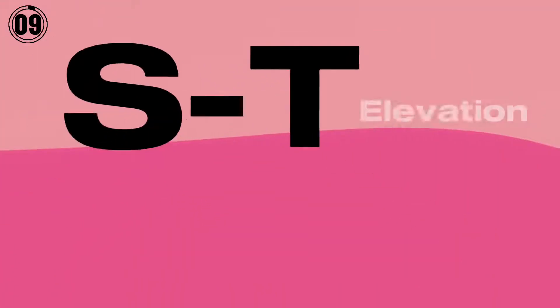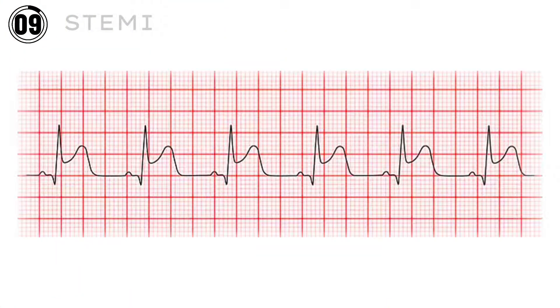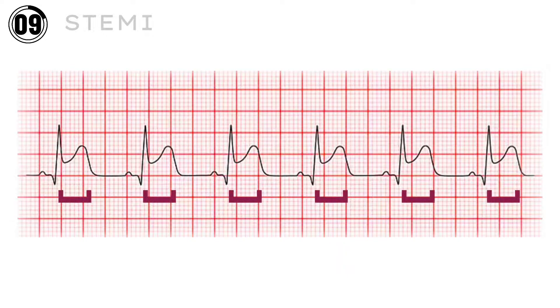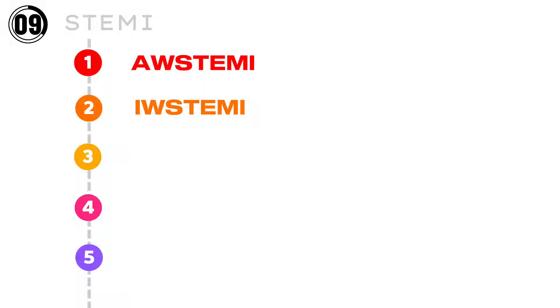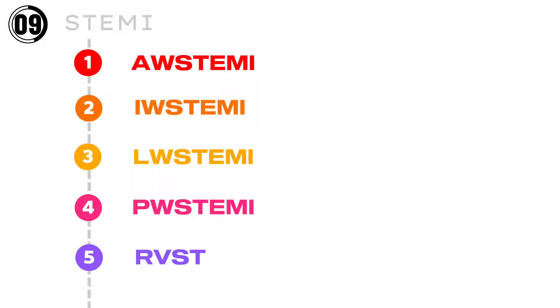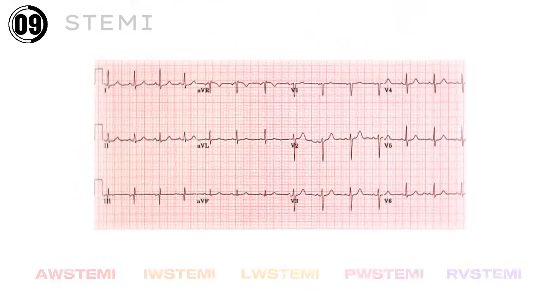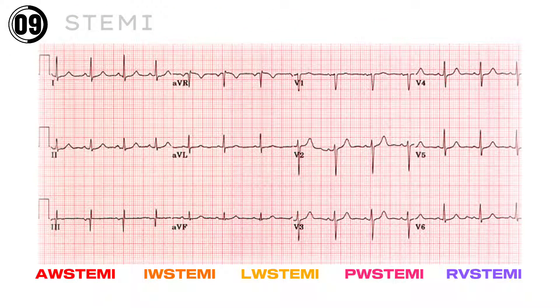ECG number 9 — one of the most famous ECG abnormalities: ST Elevation Myocardial Infarction, the ECG of a heart attack. In this ECG, the ST segment is elevated from its baseline. ST Elevation Myocardial Infarction has five types: Anterior Wall, Inferior Wall, Lateral Wall, Posterior Wall, and Right Ventricular ST Elevation Myocardial Infarction. We need a 12-lead ECG to evaluate these, and we need to know which lead to look at for each particular type.